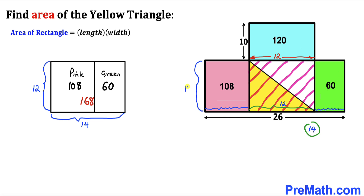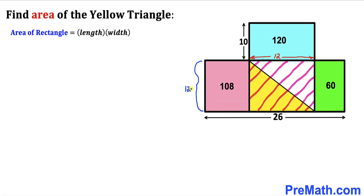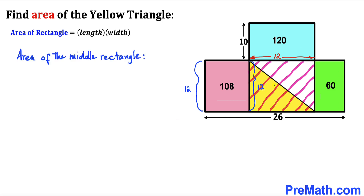Now we can see that if this side length is 12, then the opposite side length has to be 12 centimeters as well. Therefore, the area of this middle rectangle is going to be 12 times 12, which gives us 144 centimeters square.